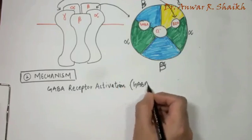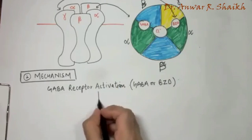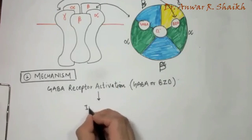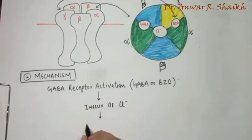Due to this binding the central chloride pore opens up and causes the influx of chloride ions, which further causes inhibition of the neuron by creating a state of hyperpolarization in the neuron.